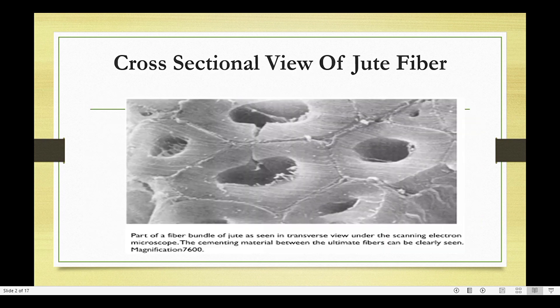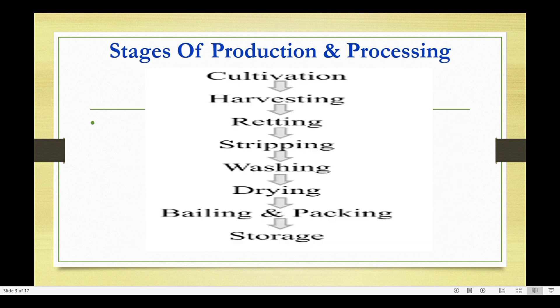The cross-sectional view of the jute fiber is seen in the picture obtained by scanning electron microscope. This is the view of jute fiber in the stages of production and processing from seed to fiber farm.